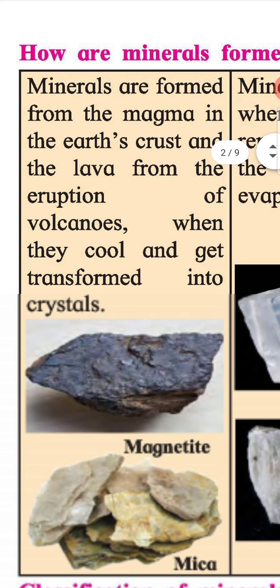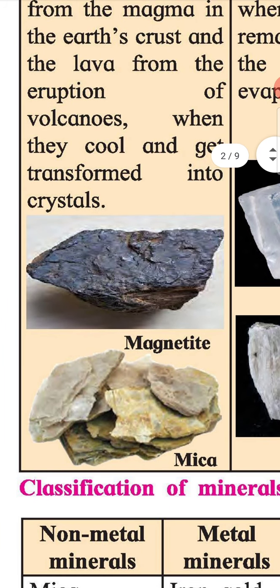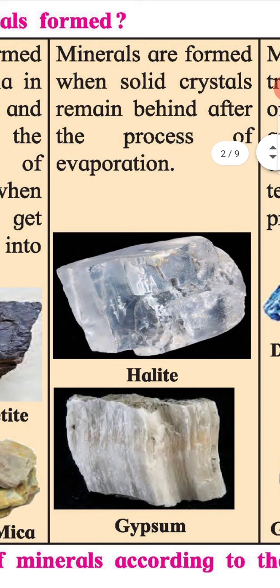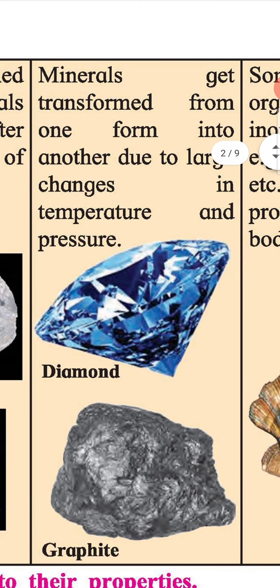Minerals are formed from the magma in the earth's crust and lava from volcanic eruption. When they cool and get transformed into crystals, minerals such as magnetite and mica are formed. Minerals are also formed when solid crystals remain behind after the process of evaporation — for example, halite and gypsum. Minerals can also get transformed from one form into another due to large changes in temperature and pressure — for example, diamond and graphite.